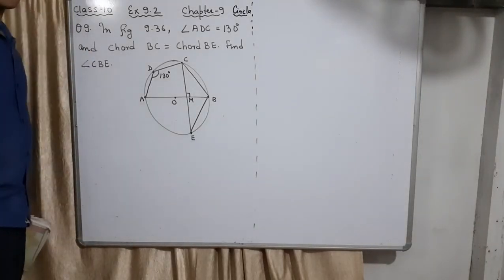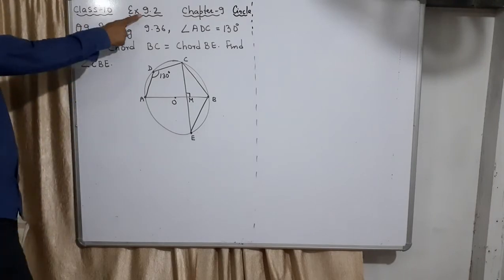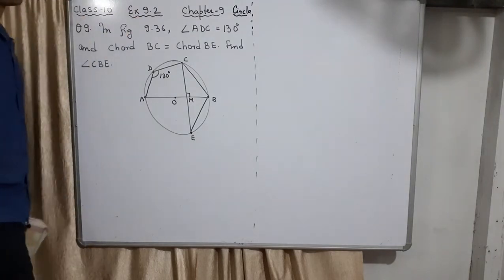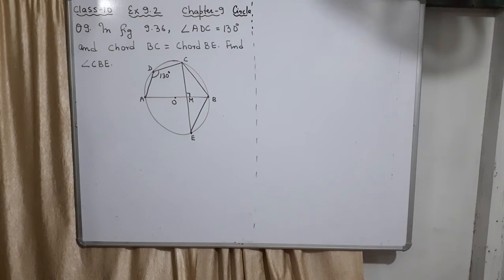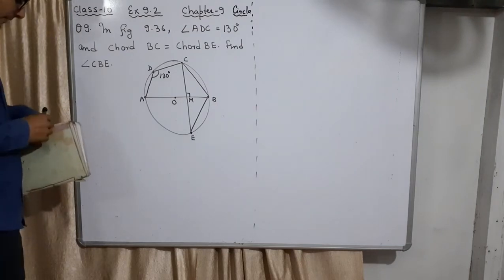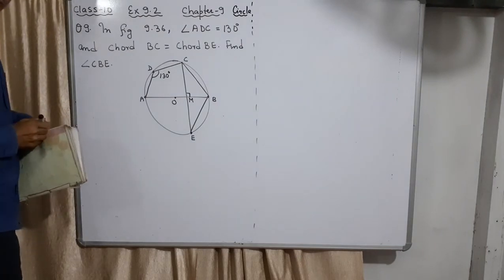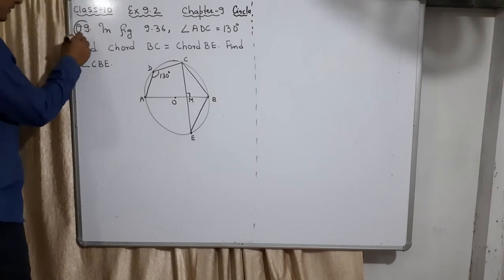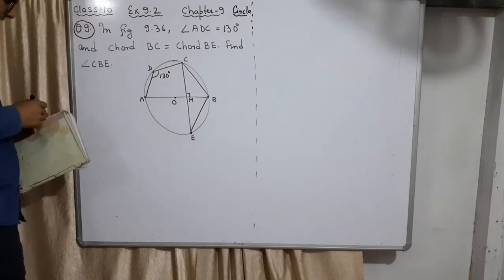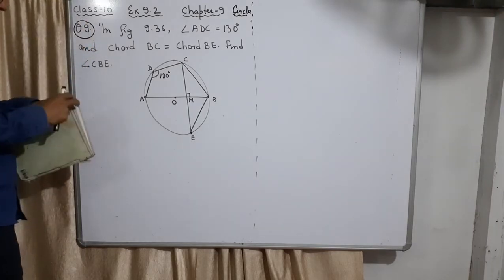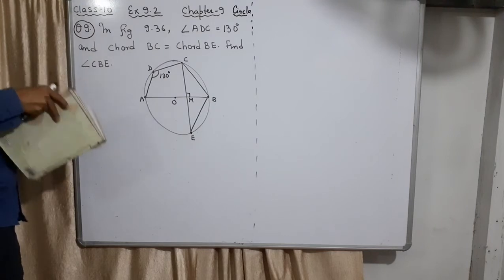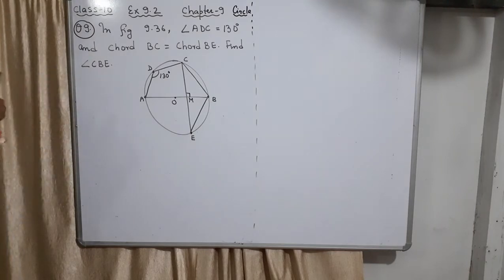Welcome back to the next question, Class 10, Exercise 9.2, Chapter 9, the name of the chapter is Circle. Question number 9 is like this: in figure 9.36 of course it is about your textbook, on your textbook 9.36 figure is there. You can see the page number for this question is 207. We are about to finish 9.2 also.